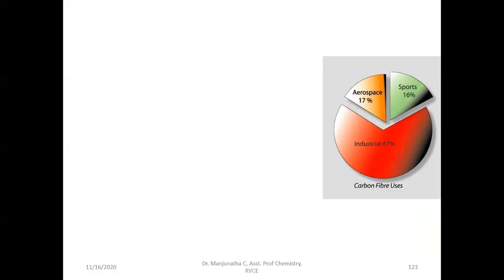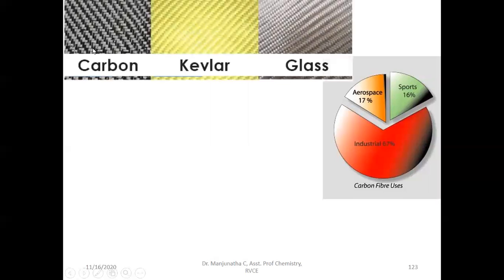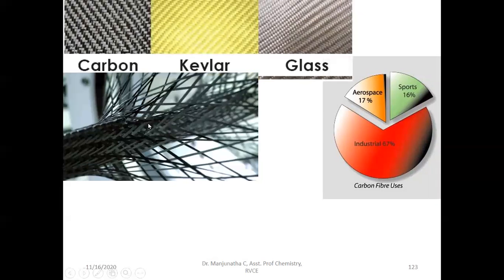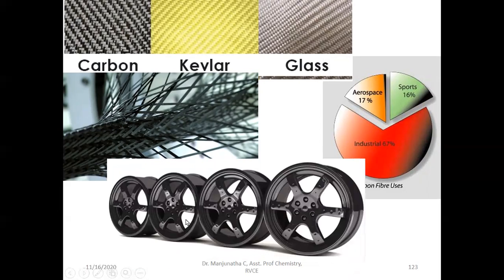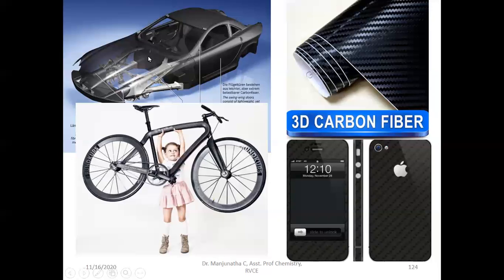Carbon fiber is used about 67% in industries and 17% in aerospace and aircraft applications as a polymer composite, and in sports. This is the actual appearance of carbon fiber. Kevlar and glass fiber — which is made of silica — are also used; however, carbon fiber has very superior properties compared to these two. This is an alloy wheel made up of carbon fiber because of its light weight and high strength. You can also see car body parts completely made up of carbon fiber. Even Apple iPhone covers have been made using carbon fiber coating.